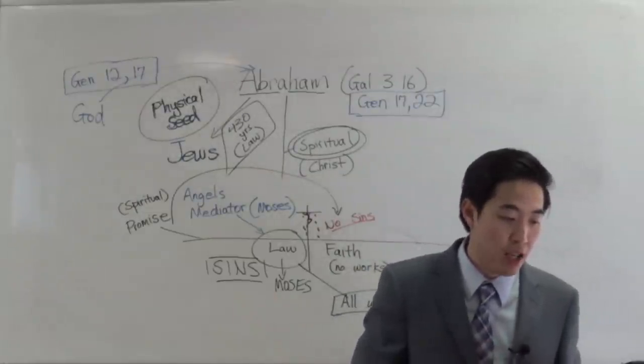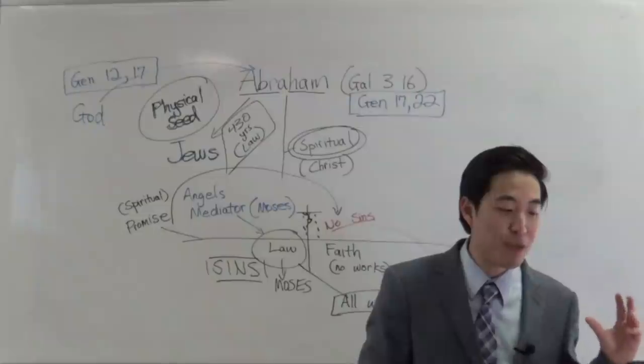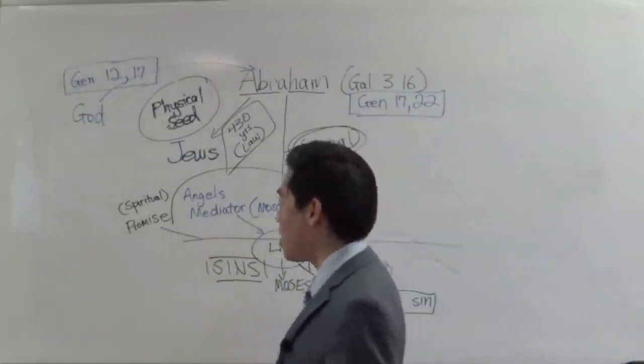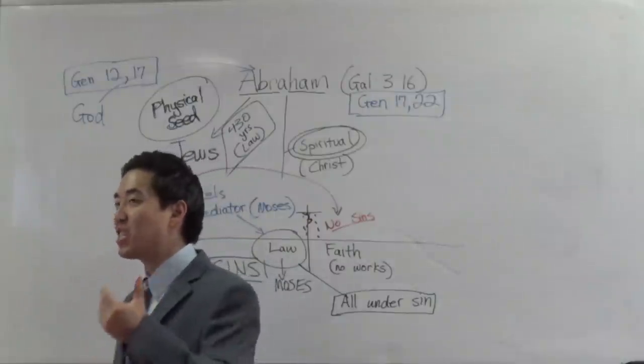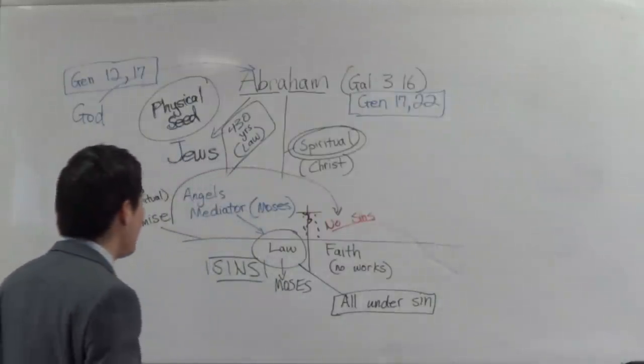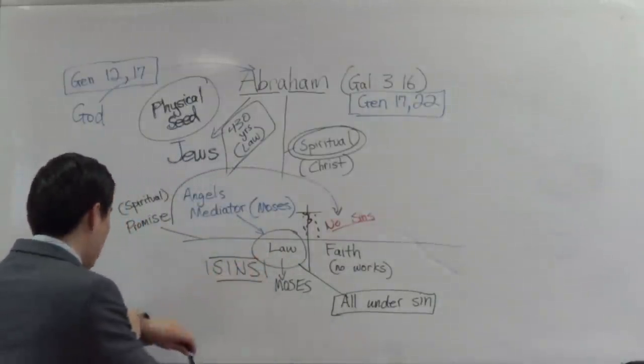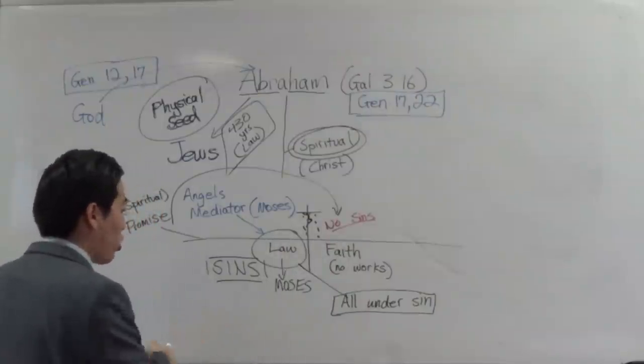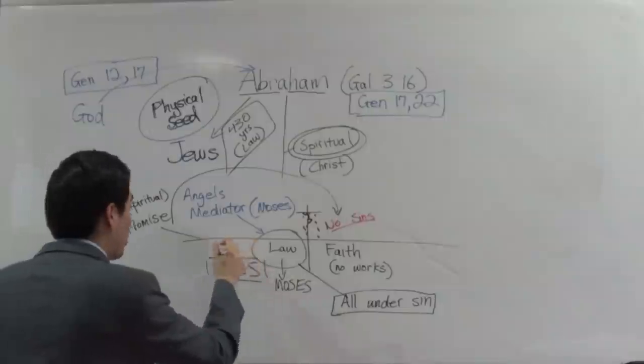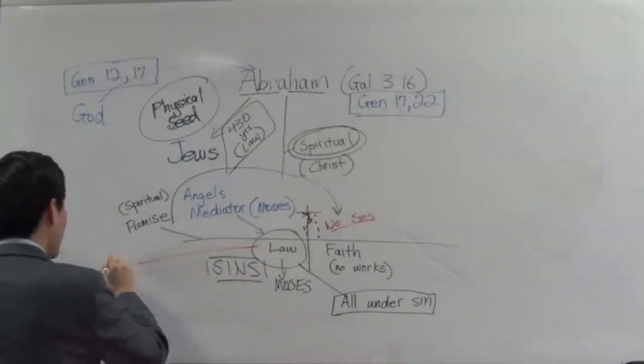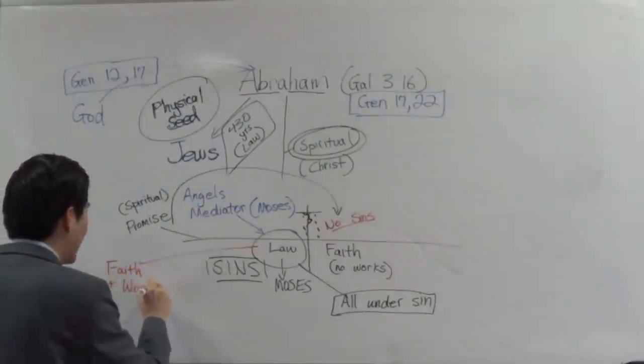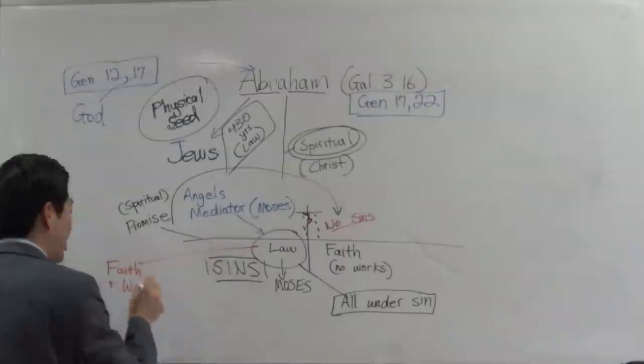Another thing is that there are anti-dispensationalists who will use these two verses to prove that the law does not give eternal life. Dispensationalists argue that salvation during the Old Testament law was faith and works. During the time of the law of Moses, it was faith and works. We believe that's how you gained life.